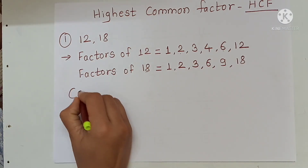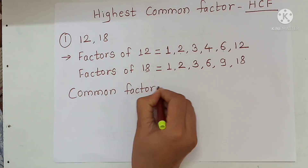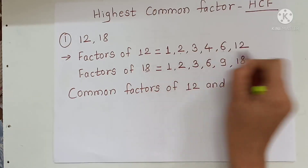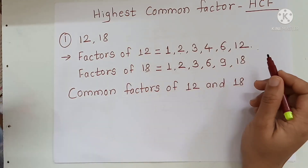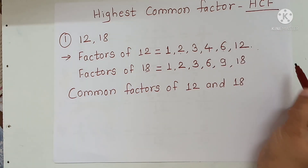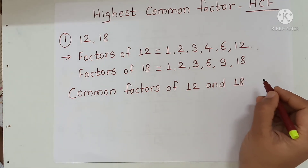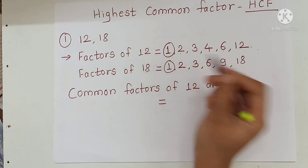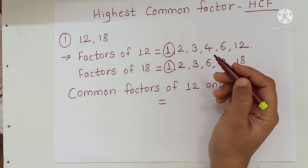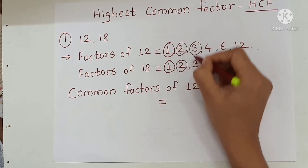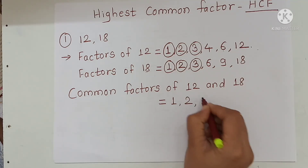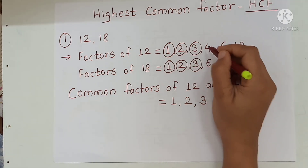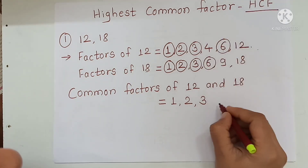Now we have to write common factors of 12 and 18. Common factors are: 1 is common, then 2, 3. And 4 is a factor of 12 but not 18, so 4 is not common in these two factors. Next number 6 — so write 6 here.